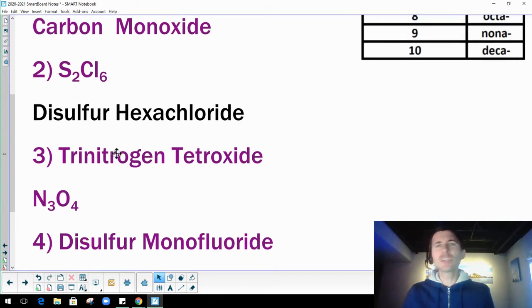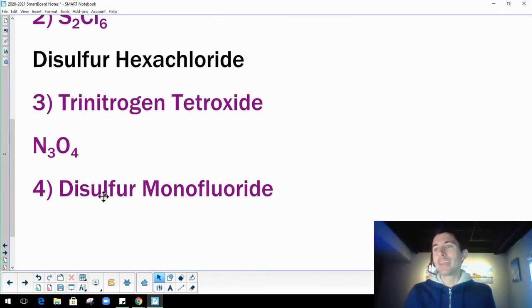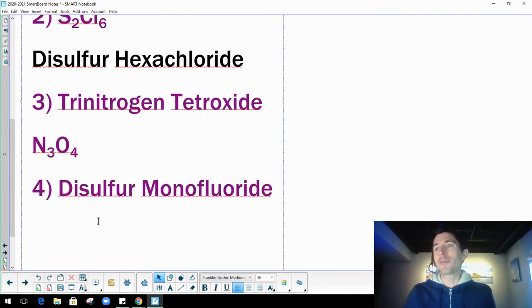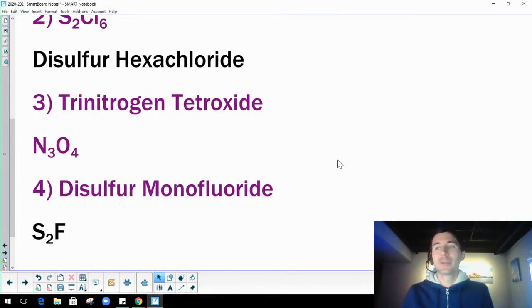And they're always going to be two words. You're not going to have like five words strung together. That's just too complicated. And then finally, disulfur monofluoride. Yep. It's just as easy as it sounds. You got two sulfurs, hence the disulfur part. Monofluoride is one fluorine. So S2F, disulfur monofluoride. That's it.